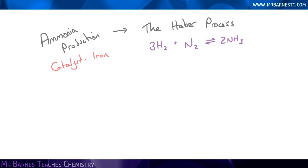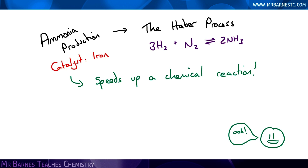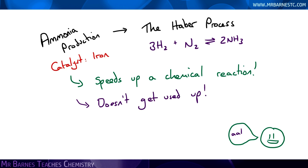The final condition for the Haber process is to use a catalyst, which in this case is iron. A catalyst simply speeds up a chemical reaction, but the beauty of it is it doesn't get used up — which means if you start off with five grams of your catalyst, you end up with five grams of your catalyst and you can use it again and again.